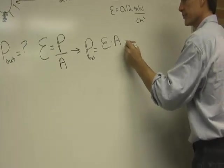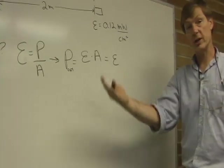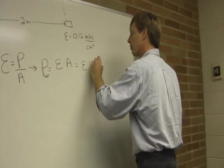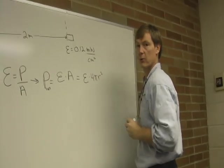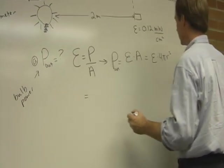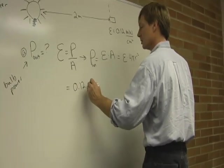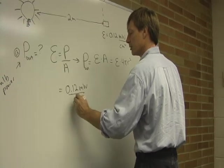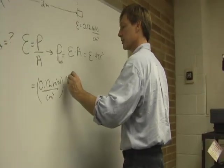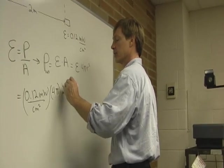And that's going to be the irradiance. I can solve it separately, but the surface area of a sphere is 4 pi times the radius squared. So I'll say E times 4 pi r squared. And now I can plug in my numbers. Equals 0.12 milliwatts per centimeter squared times 4 pi times 2 meters. And that's squared.